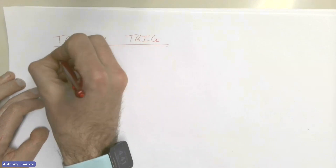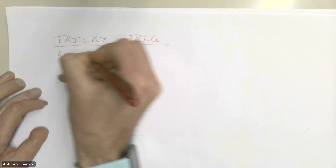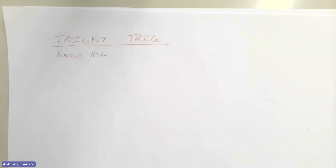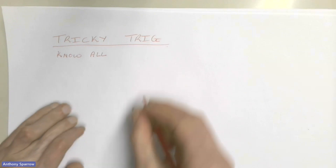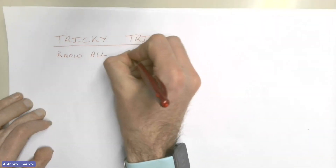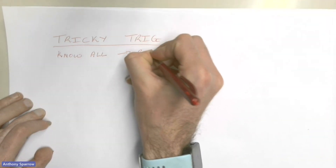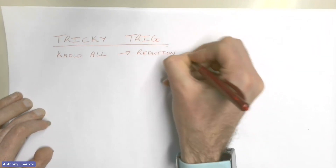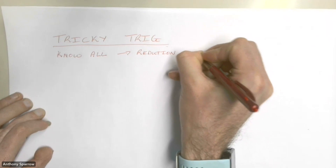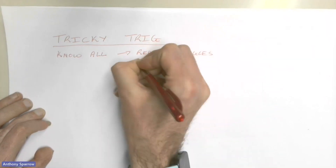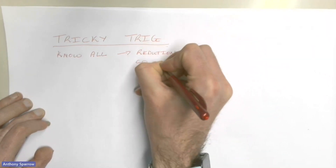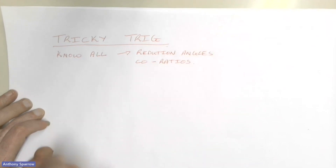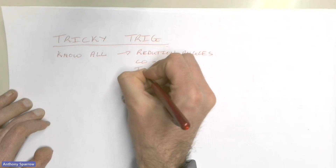The first thing when it comes to trigonometry being tricky is that you have to know all of your trig before you can even start doing your questions. That includes all of your reduction angles — if you do not know all your reduction angles you're going to have problems. Then you need to know all of your core ratios — if you don't know all the core ratios you're going to have problems. You need to know all of your identities.